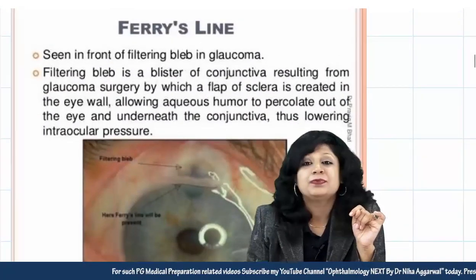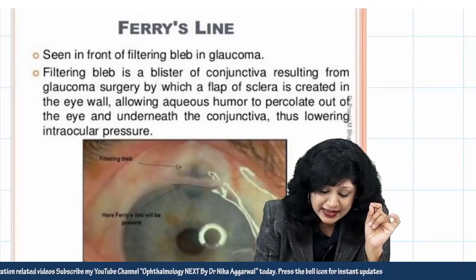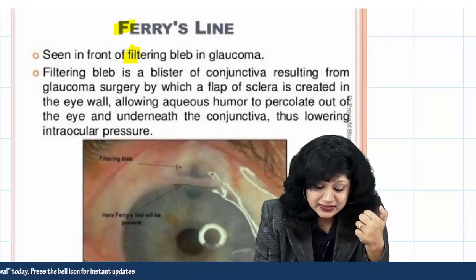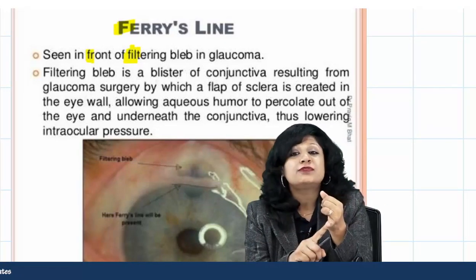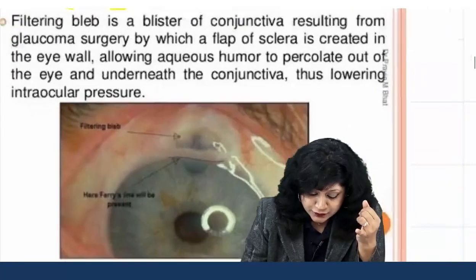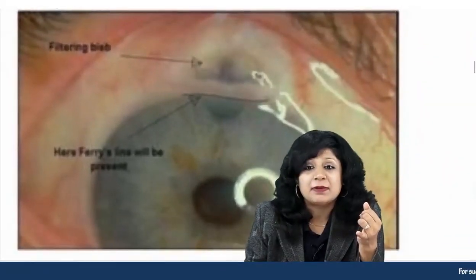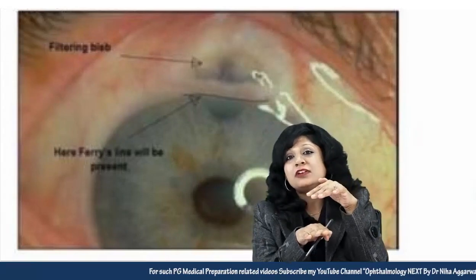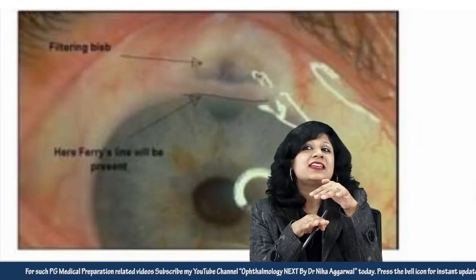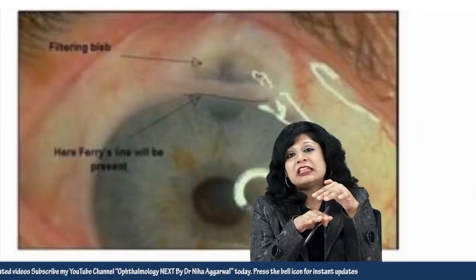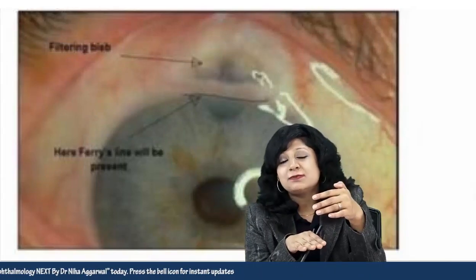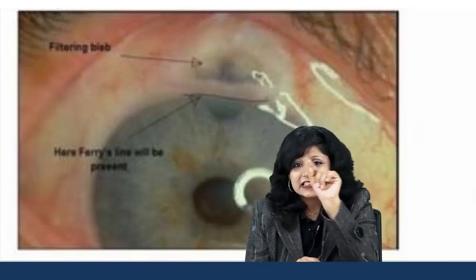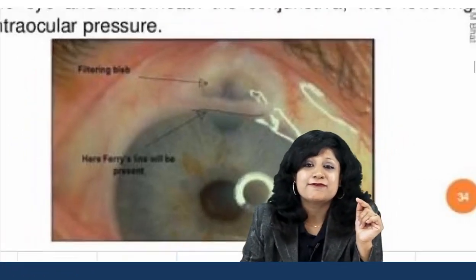Next is the Ferris line. Remember F for Ferris, F for front — it is seen in front of the filtering bleb in glaucoma. Whenever we perform a trabeculectomy and create a filtering bleb, we create a passage between the anterior chamber and the subconjunctival space. In front of that filtering bleb, you get a very sleek line called the Ferris line.